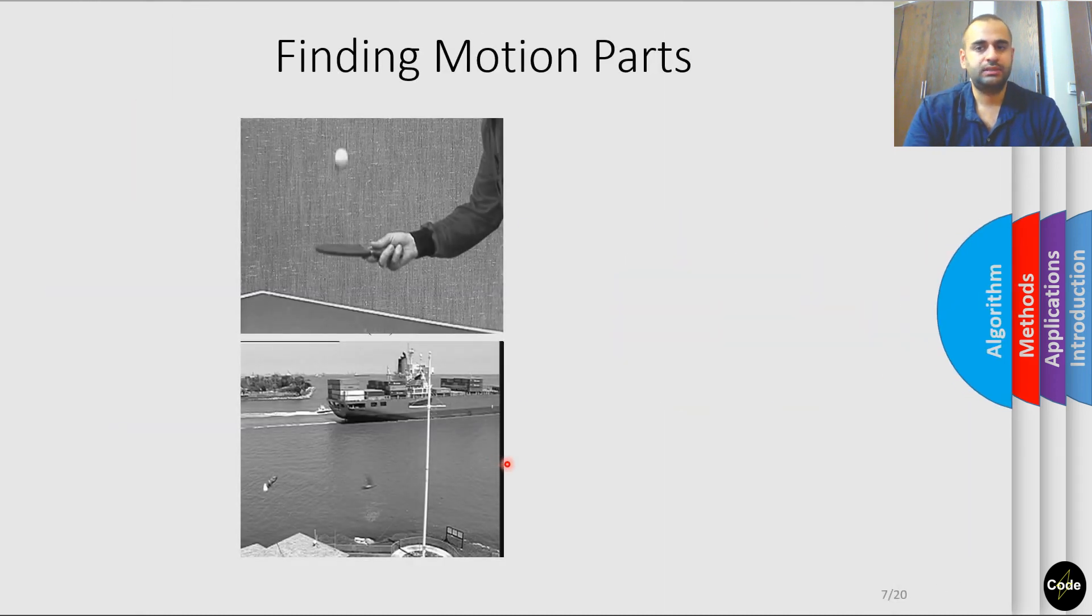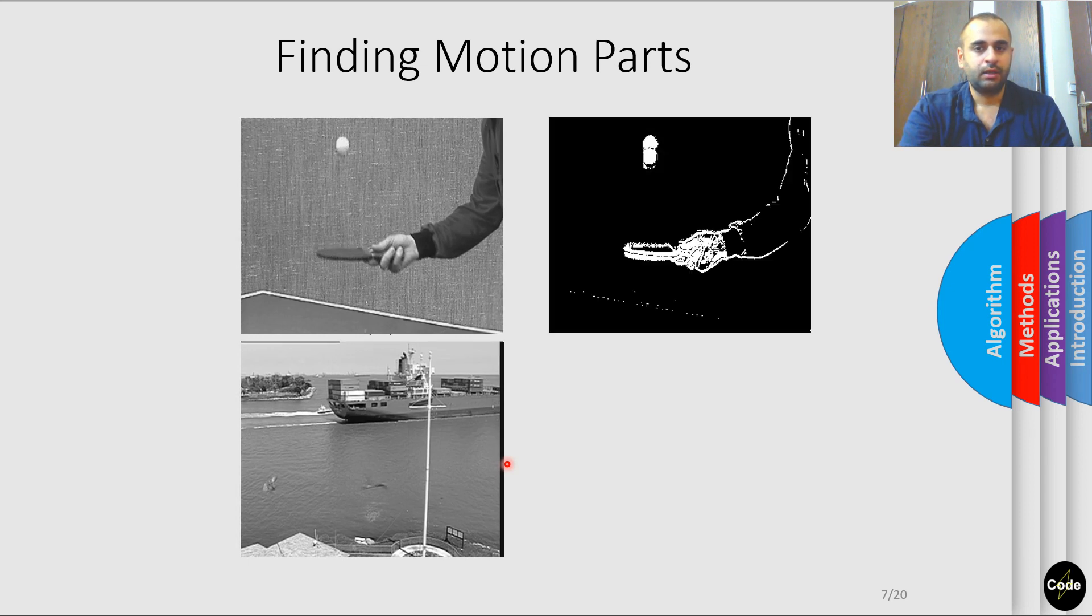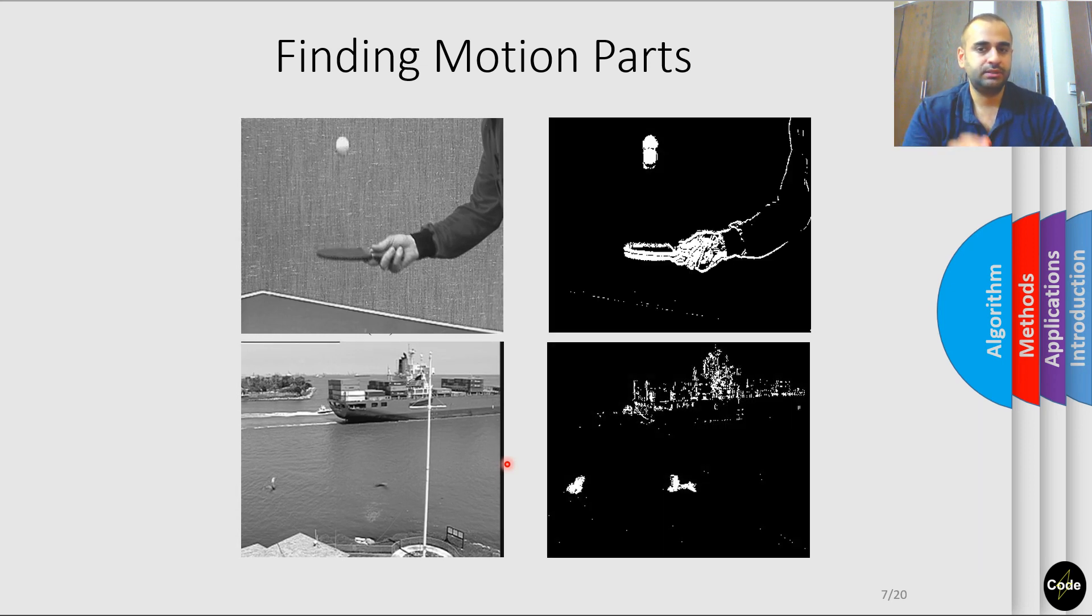After analyzing motion estimation algorithms, it becomes evident that significant computation is expended on regions without motion. To save resources, we try to identify these motionless areas before starting the search. We achieve this by generating the difference between two consecutive frames and then applying a threshold to highlight the regions displaying motion.